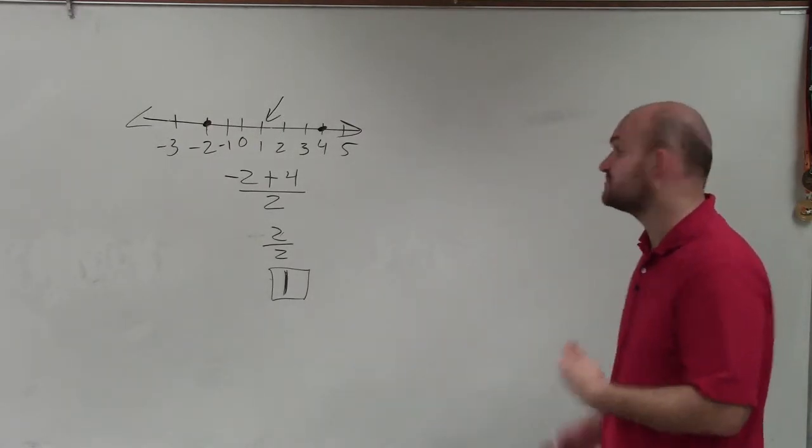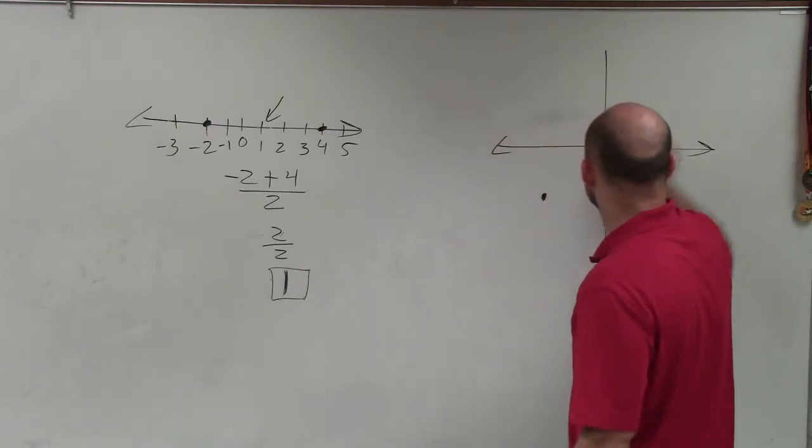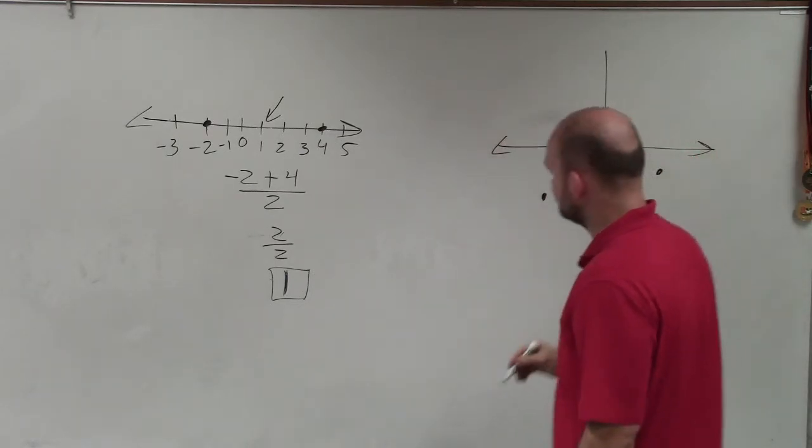So how is that going to help us when we have two points that are not on a number line? Let's say I have two points here and over here.